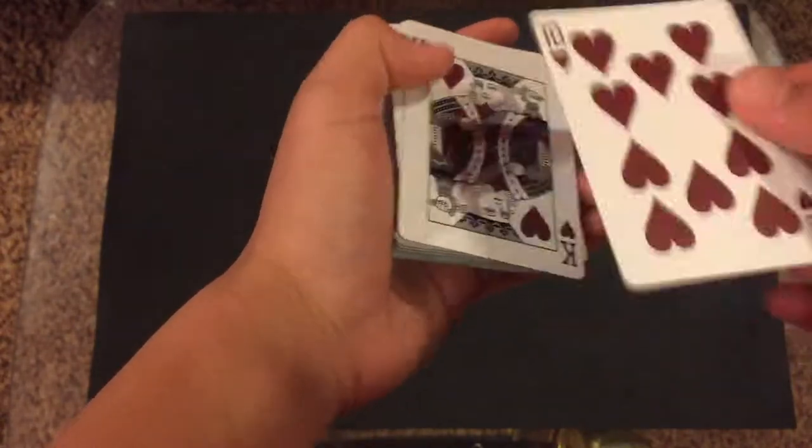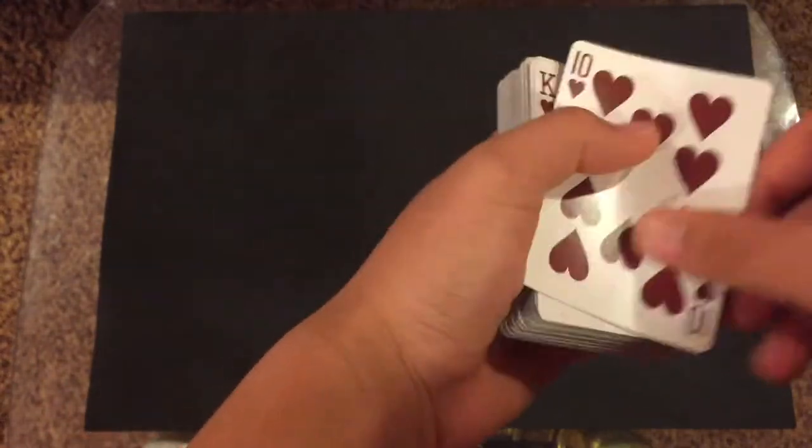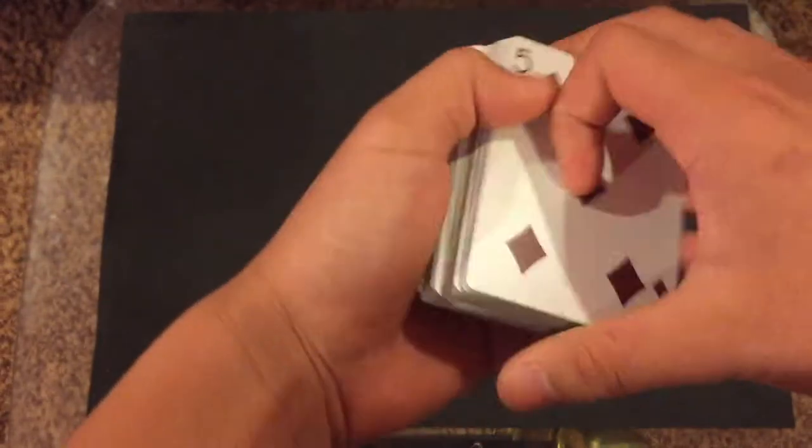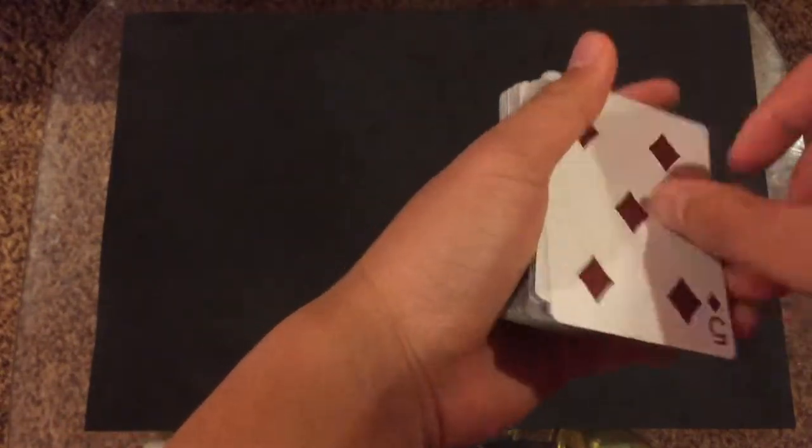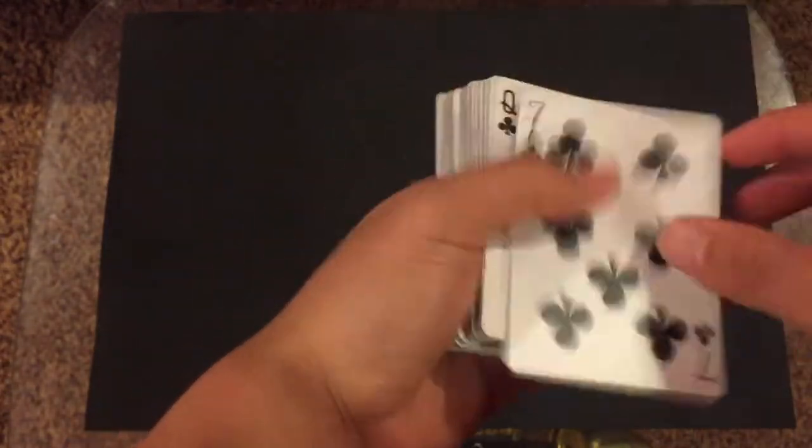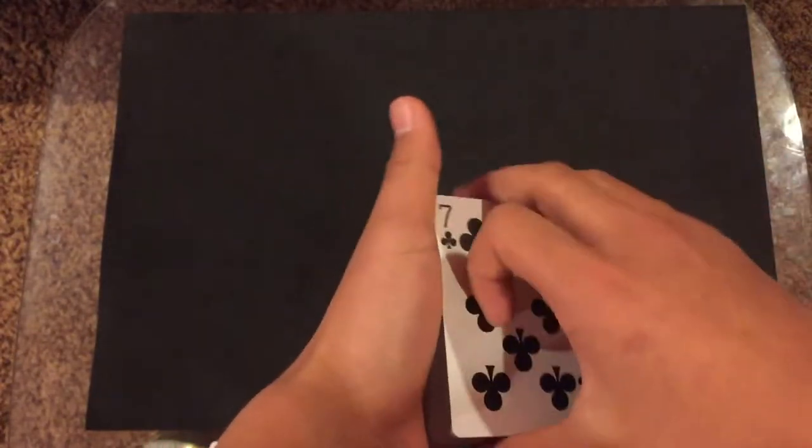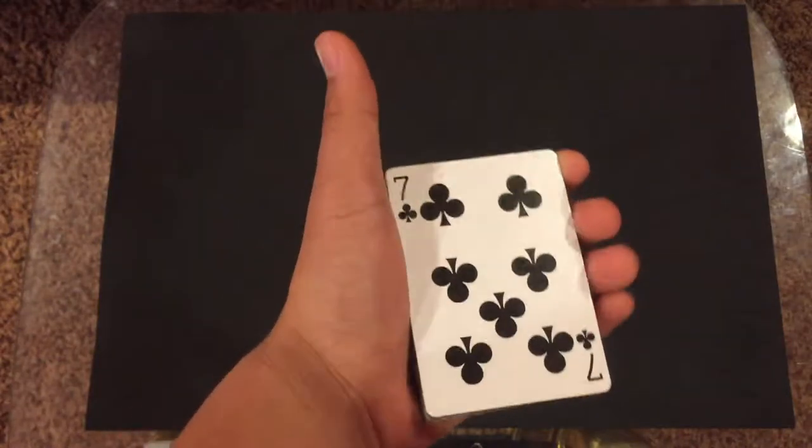So whatever card you have underneath the one you're going to change, that's what it's going to change into. So my ten of hearts is going to change into the king of hearts, or the five of diamonds will change into the eight of diamonds, or the seven of clubs will turn into the queen of clubs. You get the point.